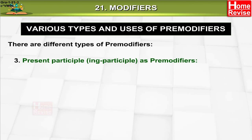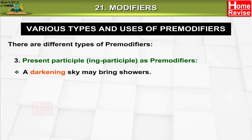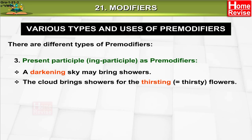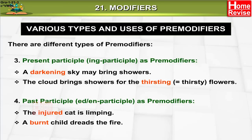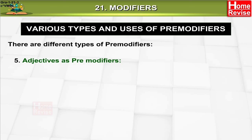Three: present participle (ing participle) as pre-modifiers. Example: 'A darkening sky may bring showers.' 'The thirsting' means 'thirsty flowers.' Four: past participle (ed or en participle) as pre-modifiers. Example: 'The injured cat is limping.' 'A burnt child dreads the fire.' Five: adjectives as pre-modifiers. Example: 'A lazy man cannot be an early riser.'